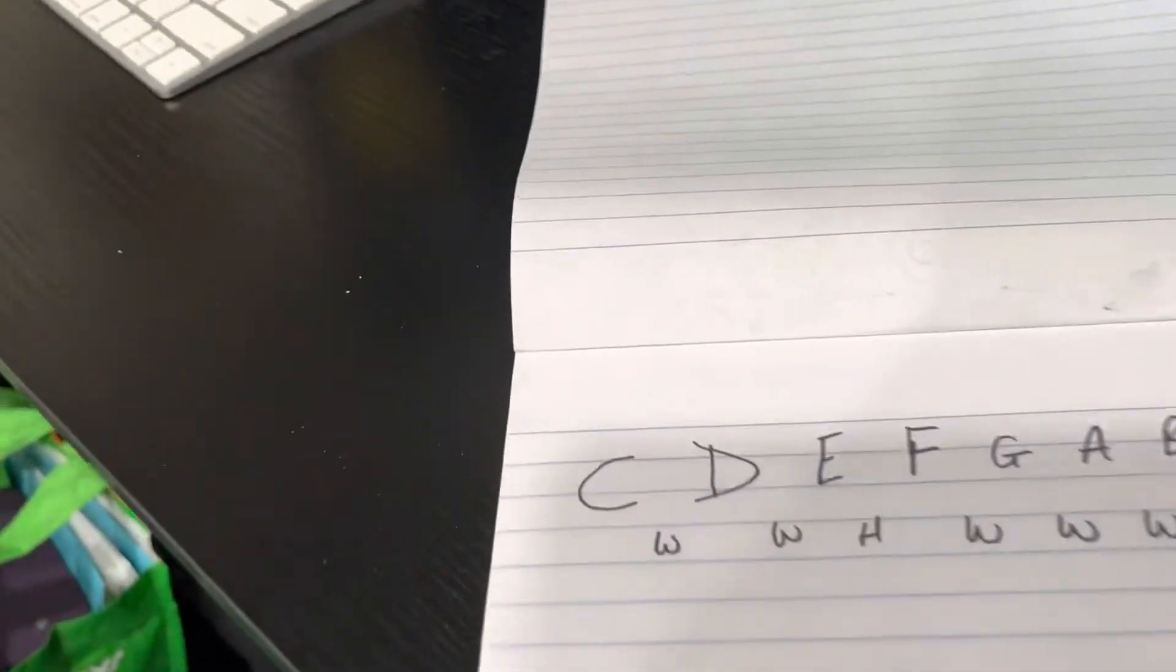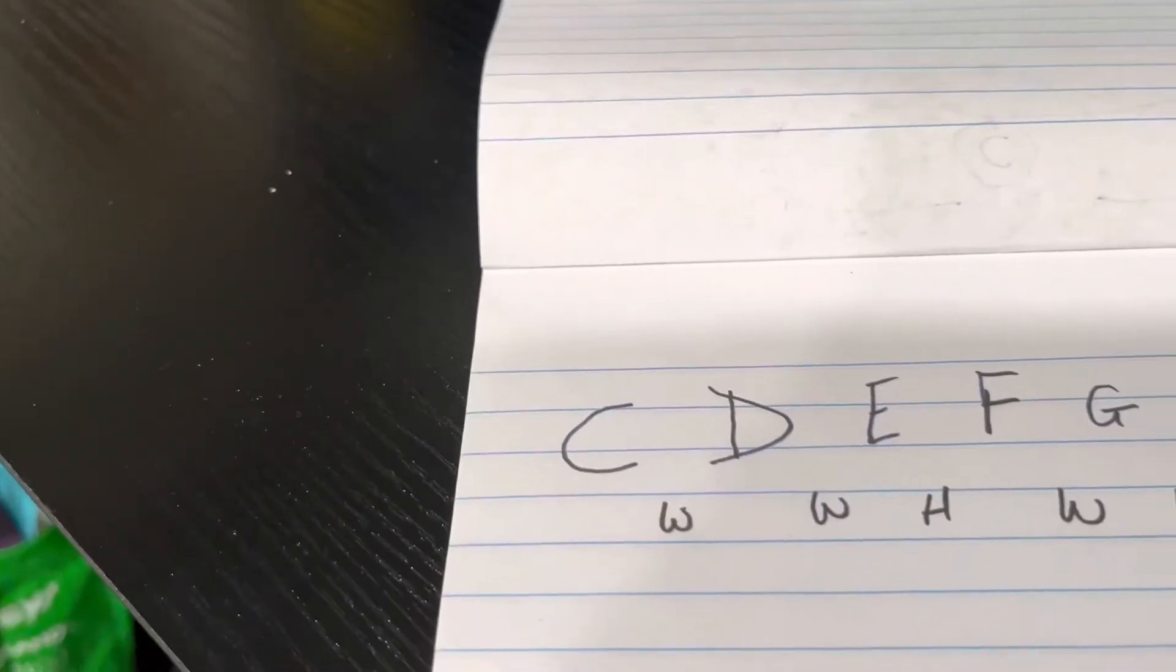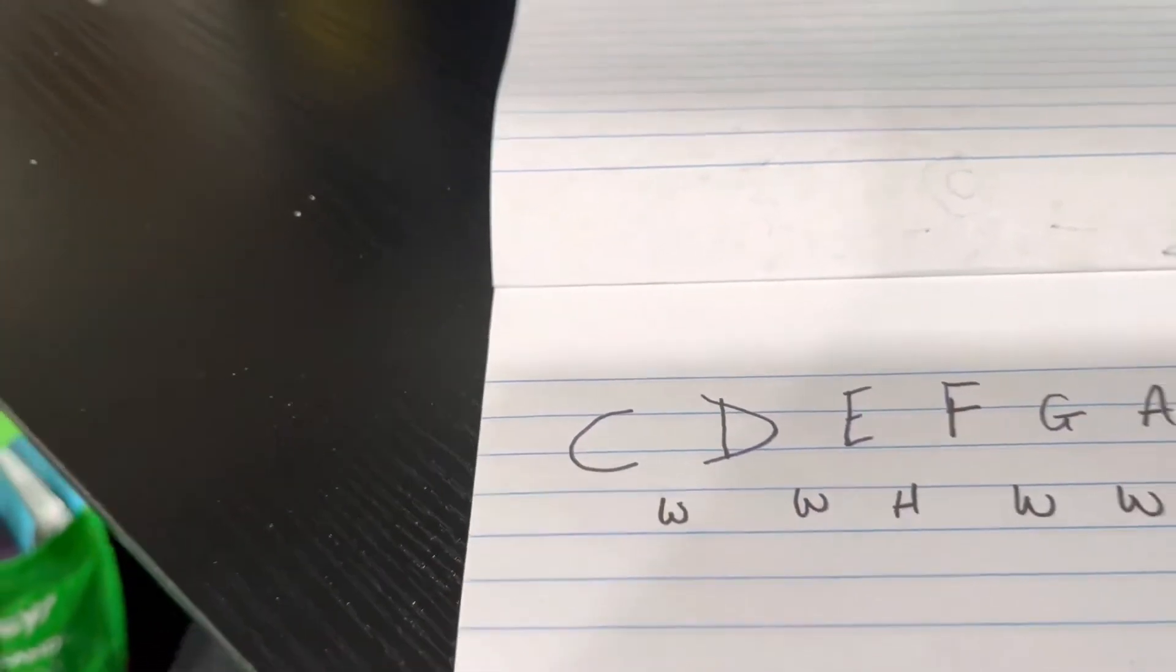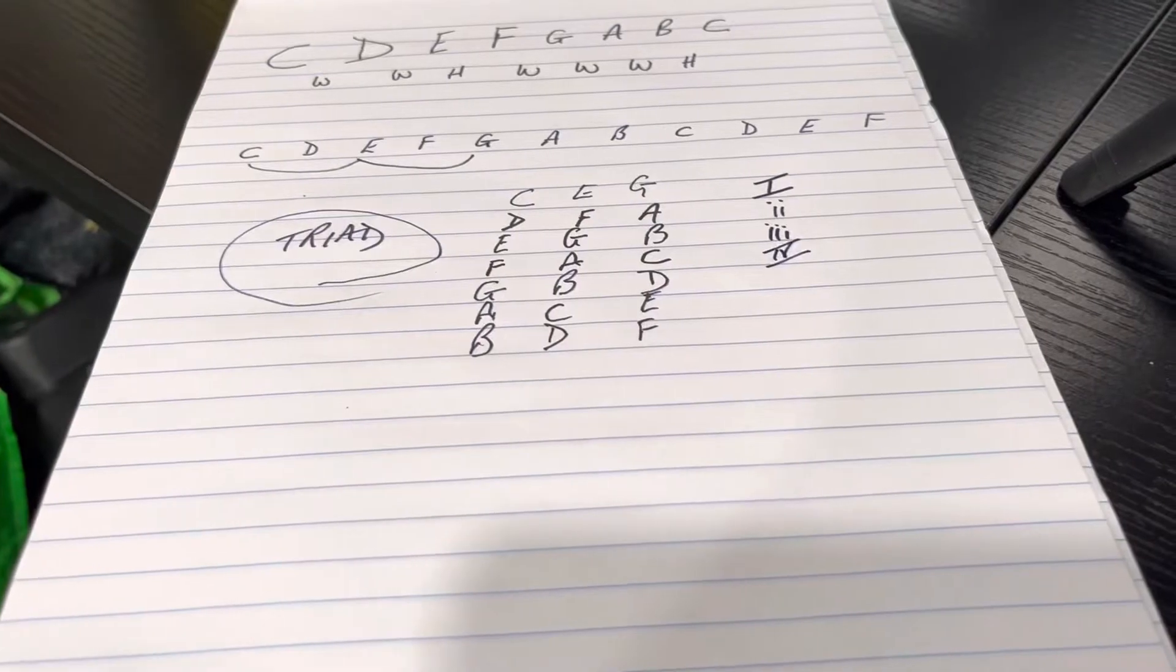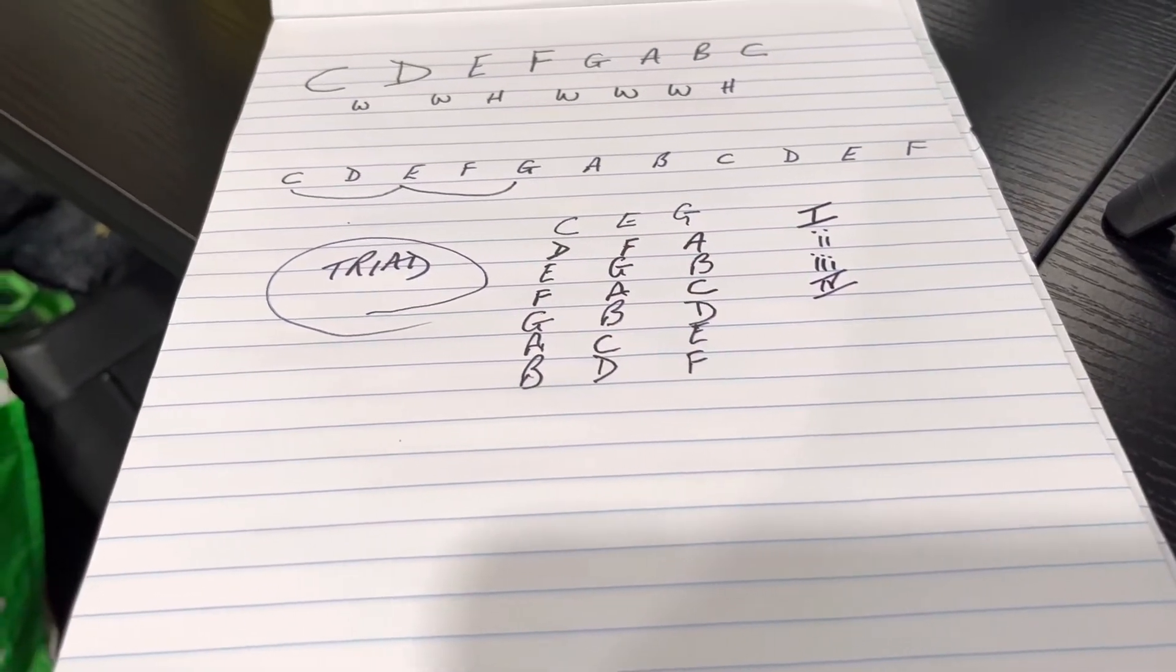The fourth chord in the key is the chord of F and it gets a Roman numeral capital IV because it's a major chord.